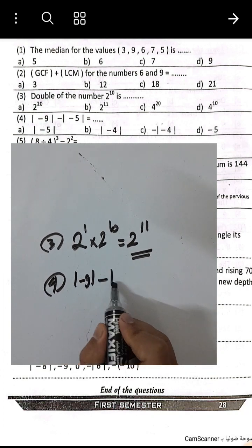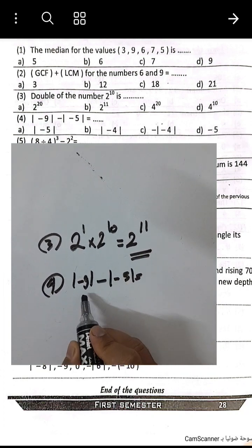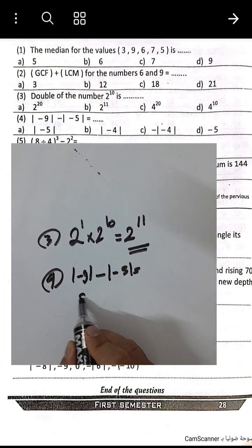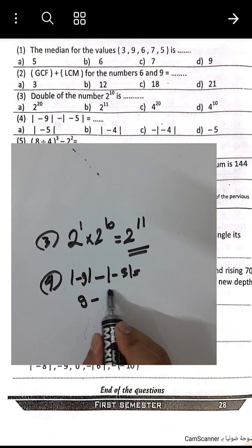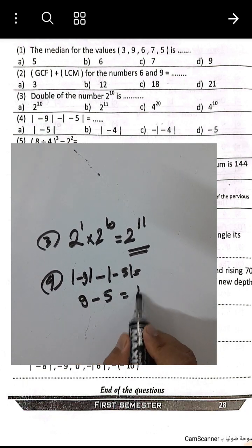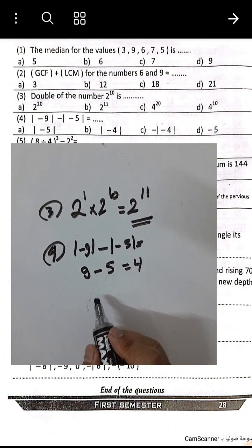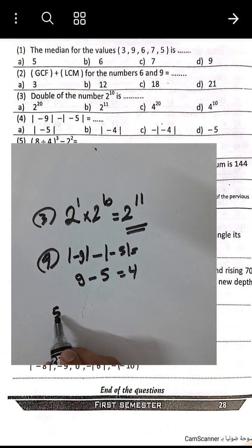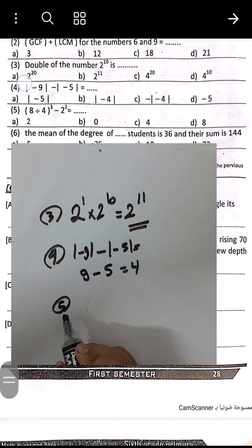Question number 4: The absolute value of negative 9 minus the absolute value of negative 5 equals 9 minus 5, which equals 4.